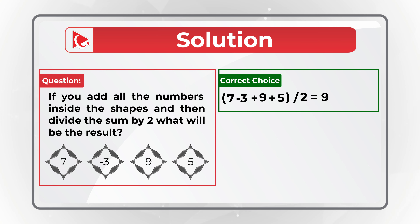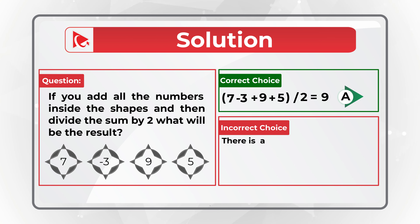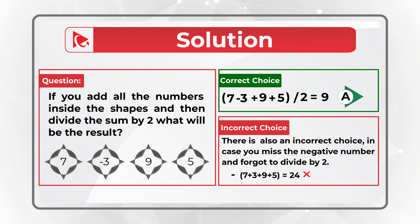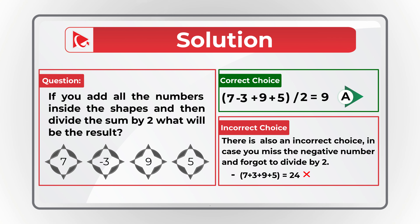What's interesting about this question is there are many ways to get the incorrect answer. If you forget to divide by 2, there's an answer for that. If you don't see the negative number and forget to divide by 2, there's a choice for that. And if you just forget the negative number, there's a choice for that too. This tells you that you have to read the instructions carefully.